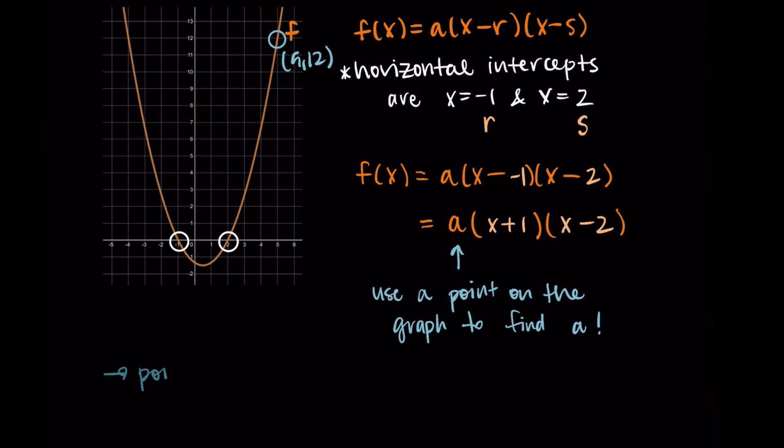So (5, 12) corresponds to an x value of 5, and an output, an f(x) value of 12. So we're going to substitute this into our formula and then solve for a.